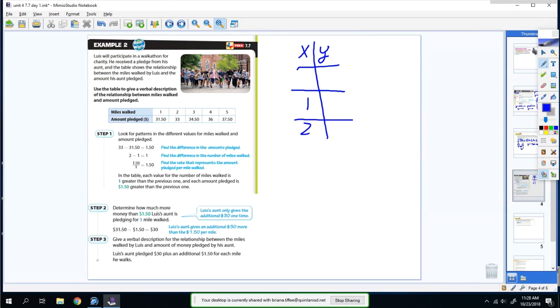So it'd be 1, 2, 3. At 1, it's $31.50. At 2, it's $33. At 3, it's $34.50. So I've got to figure out how much it changed. The change here is 1, and the change here is $1.50.